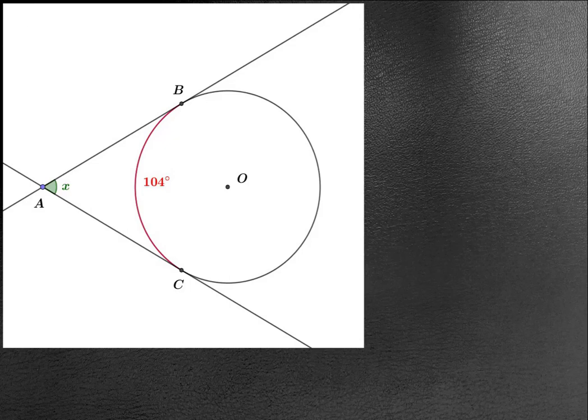Welcome again. Today we have a small geometry question here. We have this arc on the circle which is 104 degrees, and we are required to find the value of X, this angle from these two tangents from the outside of the circle.